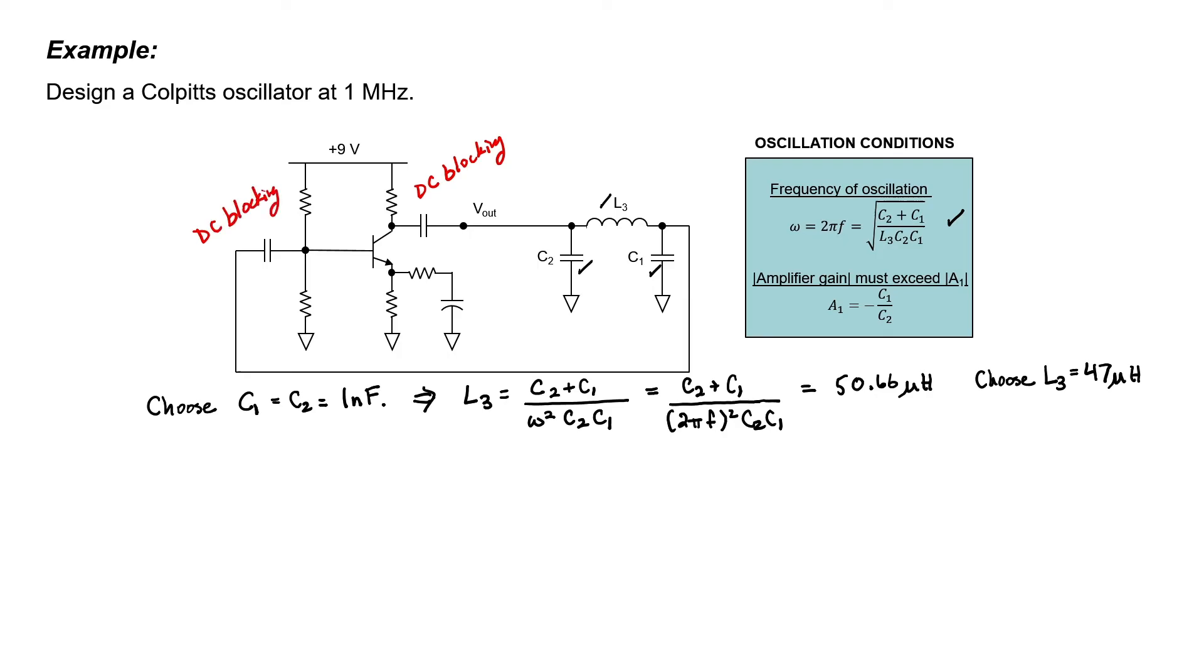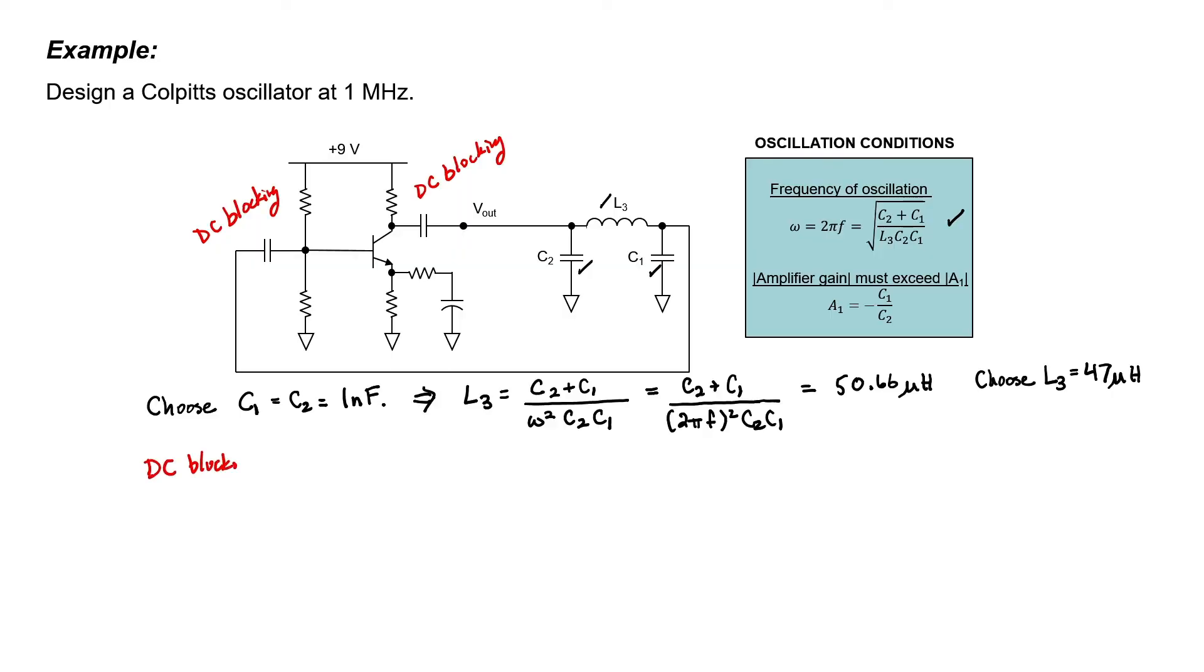These two capacitors are used for DC blocking because the transistor needs to be biased. So as long as these capacitors are large enough so that our radio frequency signal can get through them without significant attenuation, then the circuit will work. I've chosen values of 82 nF. A larger capacitor value would also work.